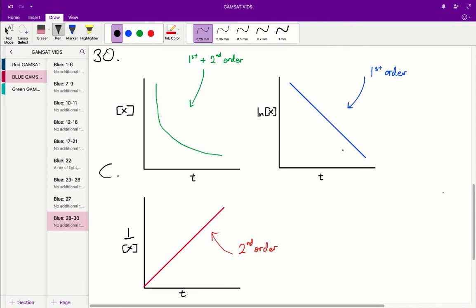A is incorrect as it is a straight line and not a curved graph. B is incorrect because that is a second order reaction. And D is incorrect because that is this reaction but with a curved line. And that is incorrect, it should be a straight line.